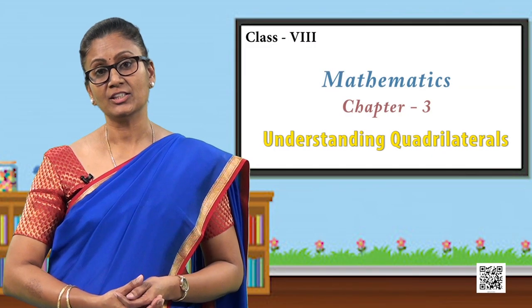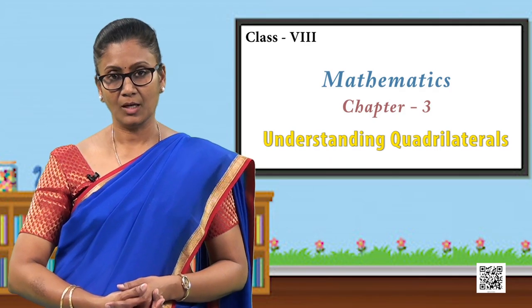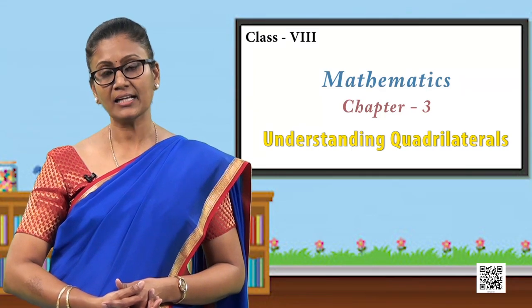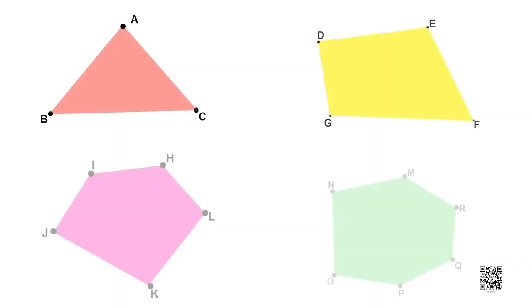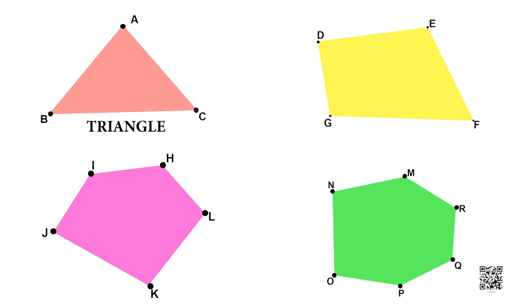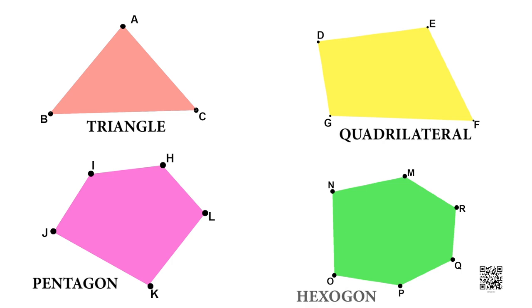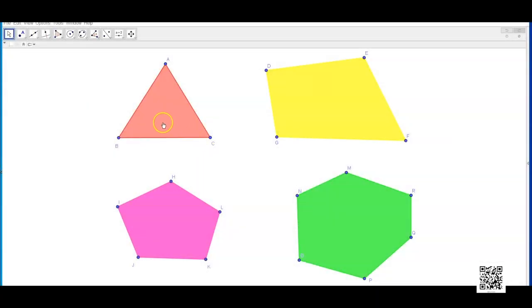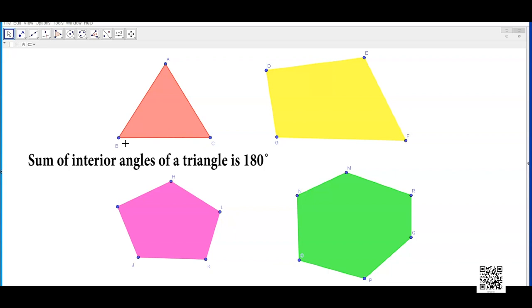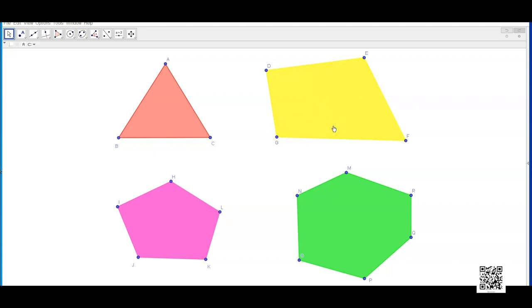That video has shown us the angle sum property for a quadrilateral. Now let us find a simple method to find the angle sum property of any n-sided polygon. We are going to use the idea of splitting the polygon into smaller triangles. To start with, let us recall the angle sum property of triangle ABC — the interior angles of a triangle sum up to 180 degrees. Now moving on, let us take the quadrilateral and divide it into smaller triangles with the same vertices.